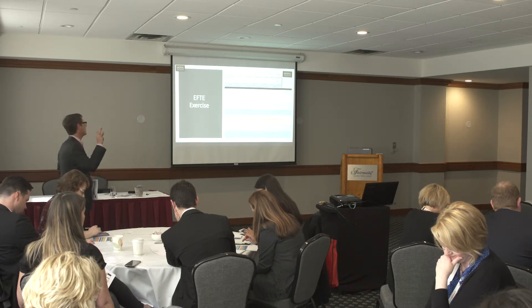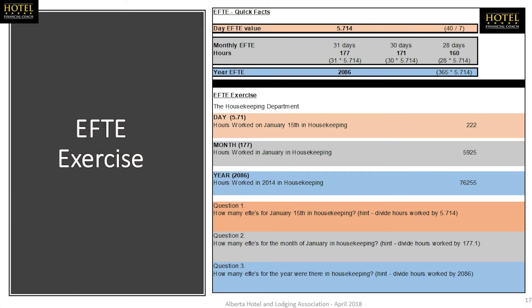The second question is: how many EFTEs do we have for the month? We worked 5,925 hours. January has 31 days, so we divide 5,925 by 177.1. The answer is 33.4 — correct.